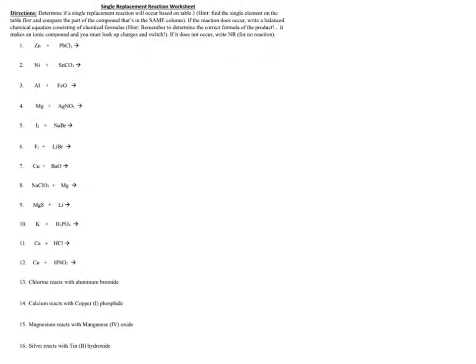Today we're going to look at how to write a single replacement reaction. In a single replacement reaction, on your reactant side, or your left-hand side, you will see a single element. Like in these examples, there's a single element, and they are all reacting with a compound, and that compound is typically in an aqueous solution. So, a single element plus a compound. In this situation, the single element may or may not change places with one of the elements in the compound.